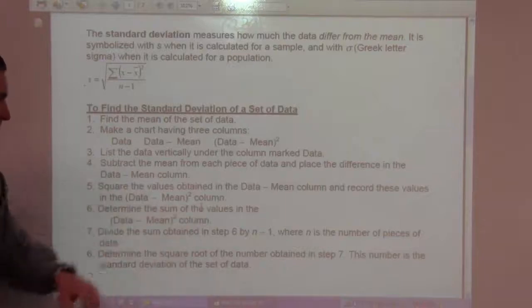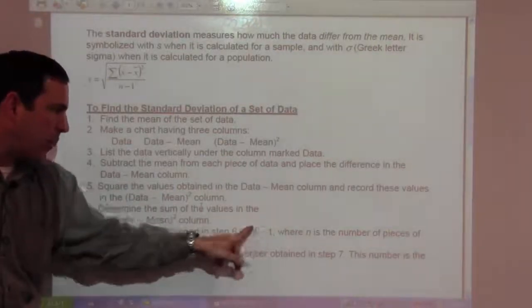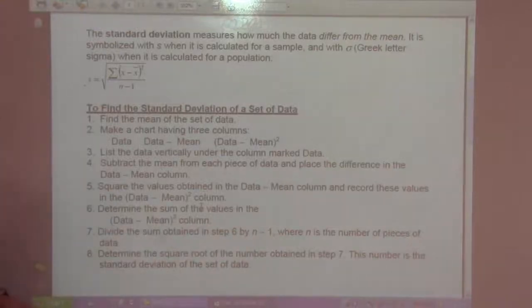Determine the sum of these values in that column. Divide the sum obtained by n minus 1, the number of data points minus 1. That's how you do it for a sample. Determine the square root of the number obtained. This is the standard deviation of the set of data.